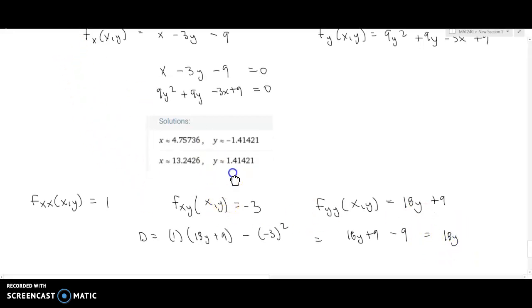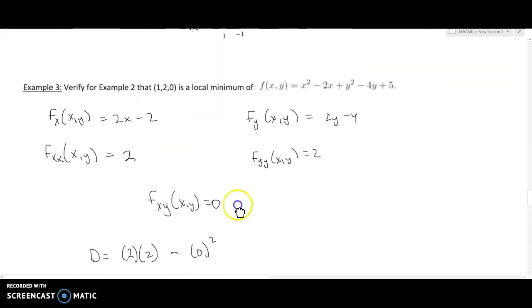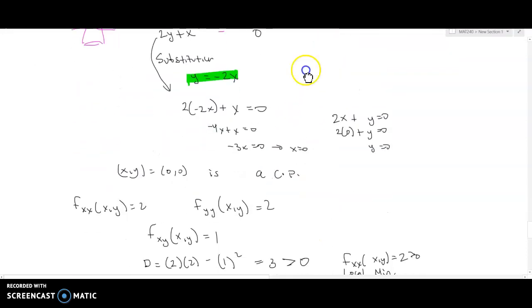So this is where we now need to compute the D value for both of these two functions. And so for the critical point x is about 4.76, negative 1.41. The D value is going to be, I'm going to plug in, there's no position for x in here, but you can think about this as plus 0x. So really only the y value will affect the D that we get out of this equation. And negative 1.41 multiplied by 18 is going to be negative 25.38. And so now I can go back up to our table and we can see what to classify this point as. If D is less than 0, then f has a saddle point at that coordinate pair.